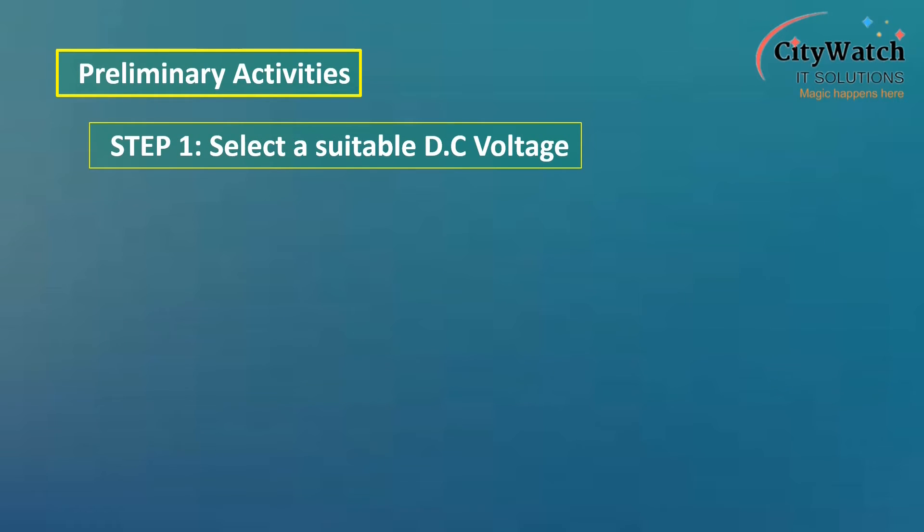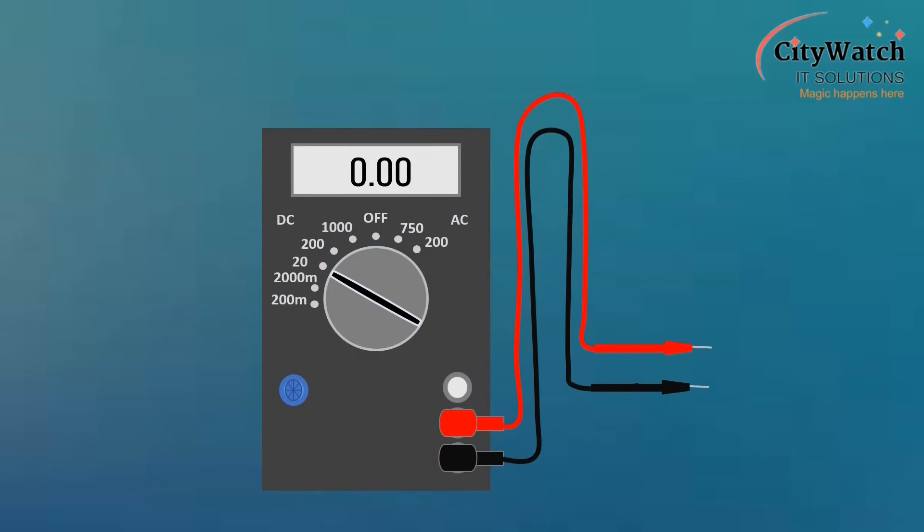On the multimeter, select a stable DC voltage in the range of the automobile voltage rating. You must set your multimeter to a DC voltage that is higher than the overall voltage of the automotive system you are working on.